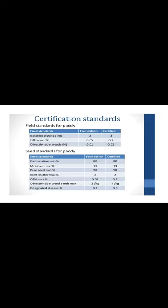Seed standards for Paddy include: germination percentage, moisture percentage, pure seeds, inert matter, ODB maximum, objectionable weed seeds, and designated diseases. Germination percentage: 80% for foundation and 80% for certified seeds. Moisture percentage: 13% in foundation and also 13% in certified seeds. Pure seeds: 98% in both foundation and certified. Inert matter maximum: 2% in both. Other distinguishable varieties maximum: 0.05% in foundation and 0.02% in certified. Objectionable seeds: 2 per kg in foundation and 5 per kg in certified. Designated diseases: 0.01% in foundation and 0.05% in certified seeds.